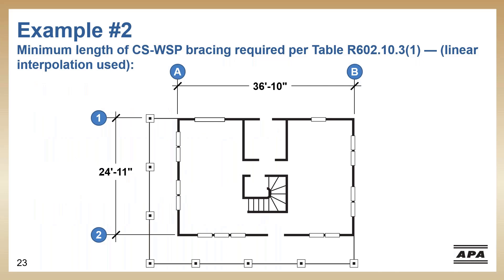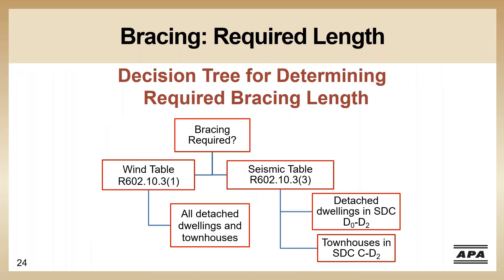This is our first floor plan. The columns outside the body of the house are just for a porch, so those can be ignored. Going back to our decision tree — this is a bit repetitive since it's the same house — we're seismic design category C and single family, so we can ignore seismic and focus on wind.